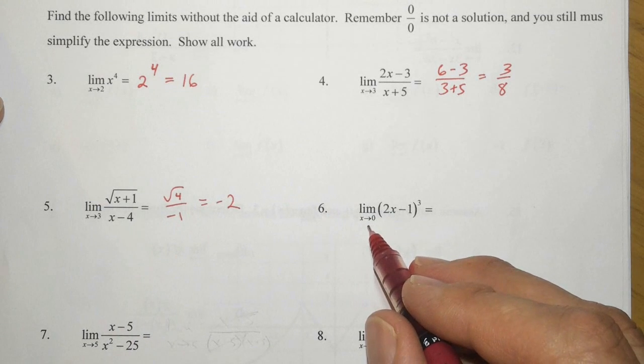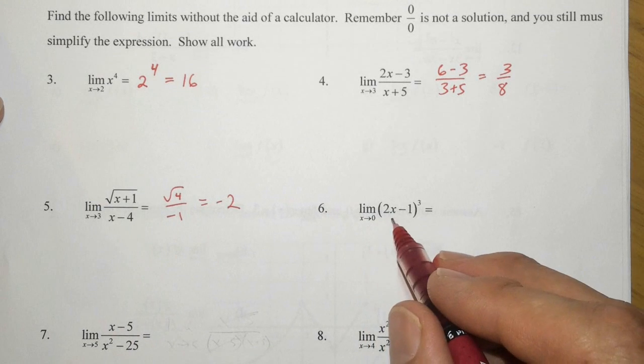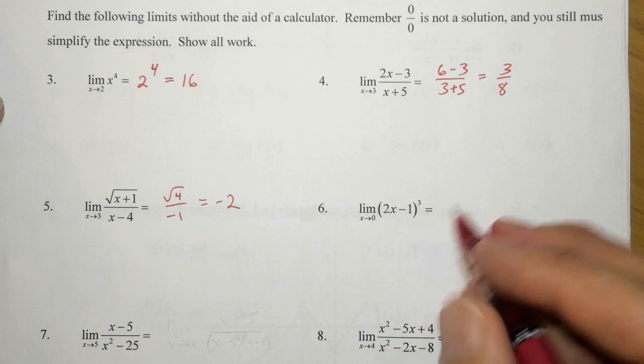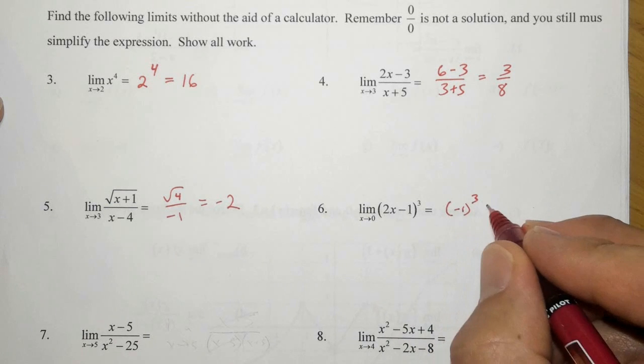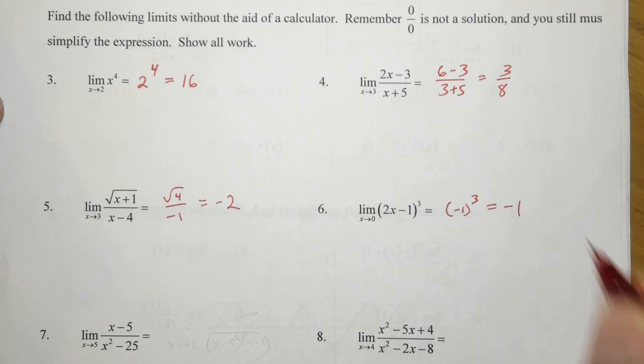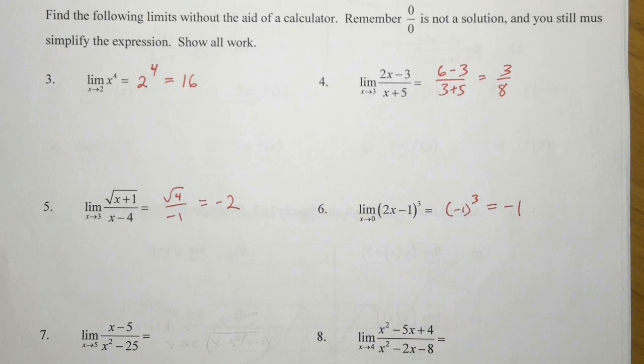Problem number six, the limit as x approaches zero. So zero minus one means we have negative one cubed, for a final answer of negative one.